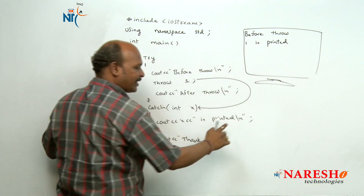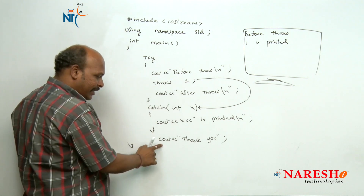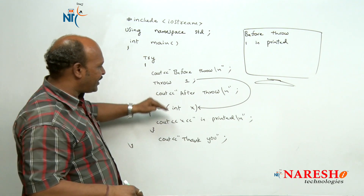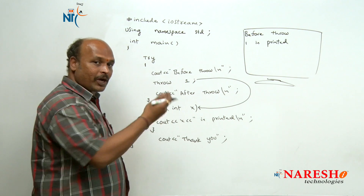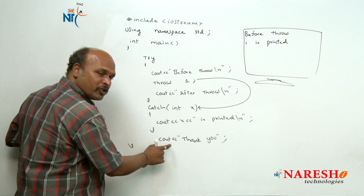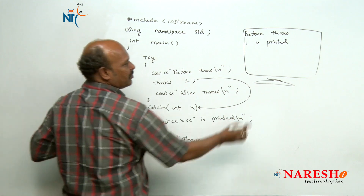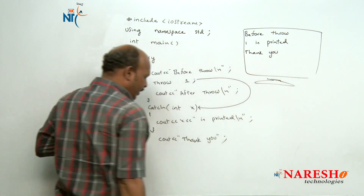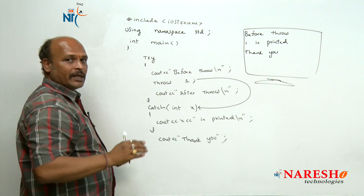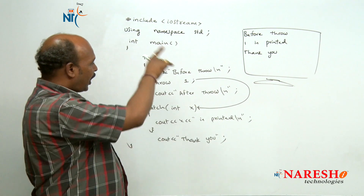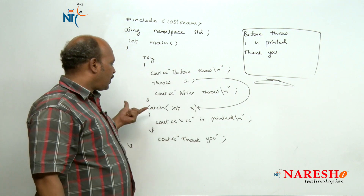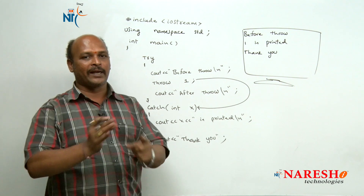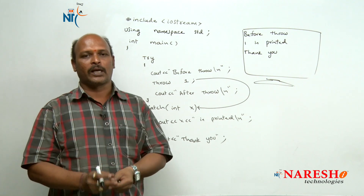Once catch receives x with value 1, it prints 1 on screen. After the catch block completes, the statement cout << "thank you" — which is after the catch — is executed and prints "thank you". Then the main block completes and execution finishes. This is how the try block, throw, and catch work together in exception handling.